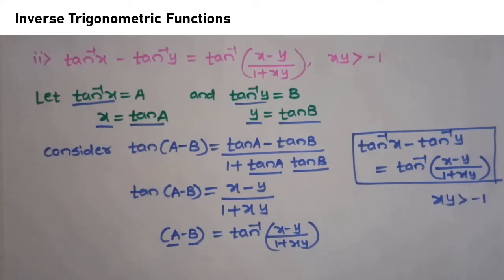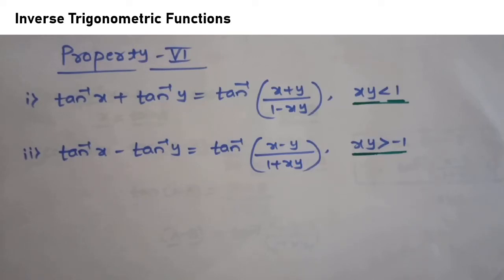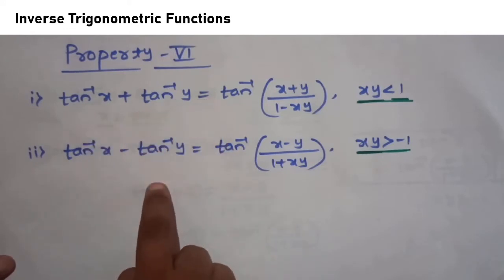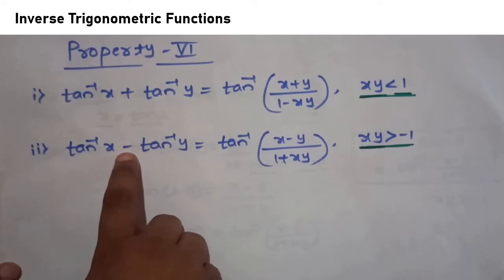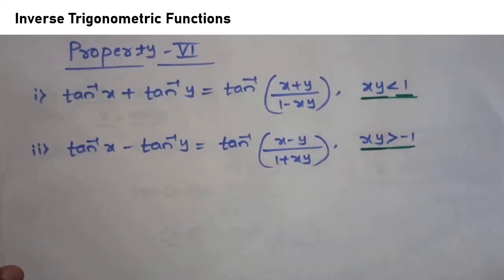To summarize the sixth set of properties: tan⁻¹x + tan⁻¹y = tan⁻¹((x+y)/(1−xy)) where xy < 1, and tan⁻¹x − tan⁻¹y = tan⁻¹((x−y)/(1+xy)) where xy > −1. A memory tip: if it's plus, the numerator sign is plus and denominator sign is minus; if it's minus, numerator sign is minus and denominator sign is plus.